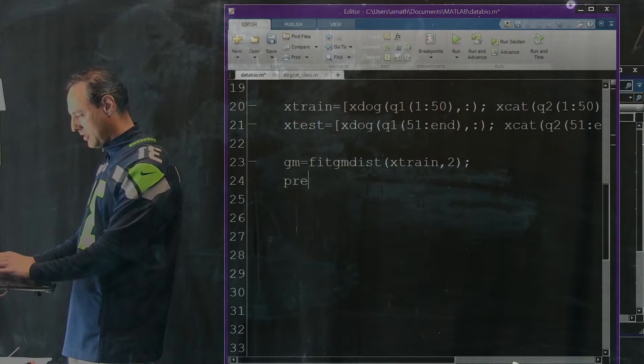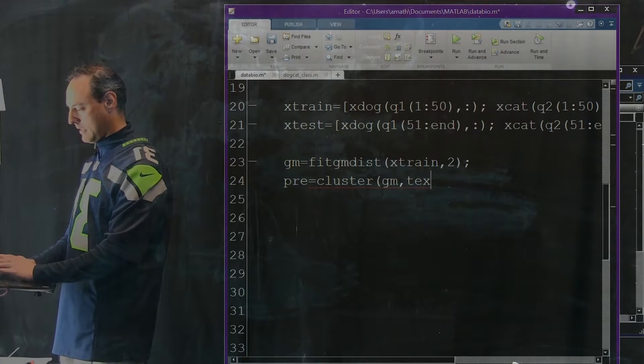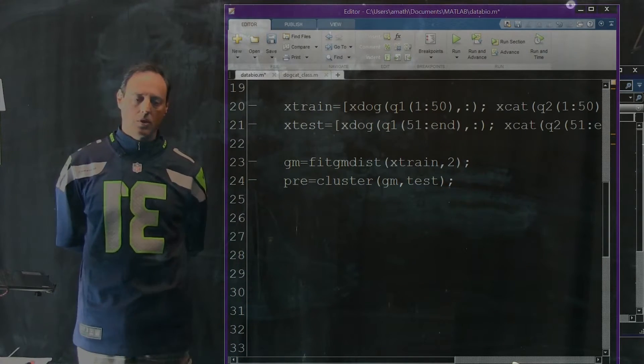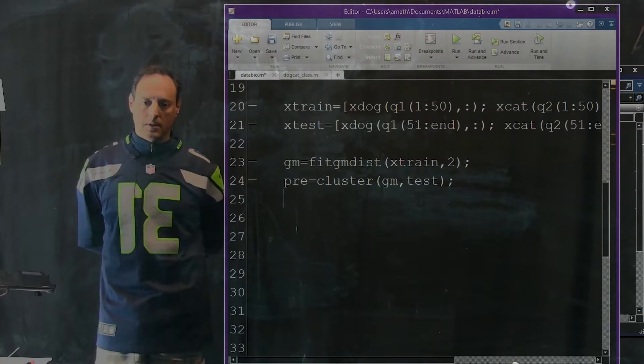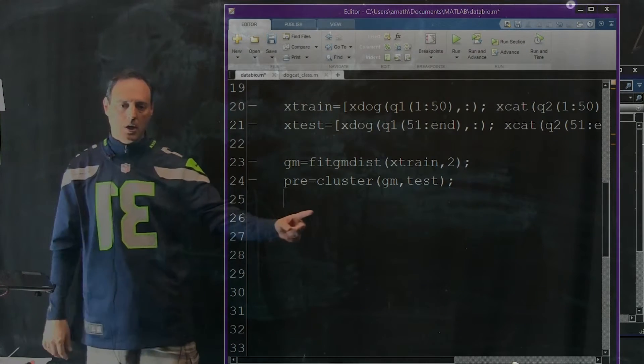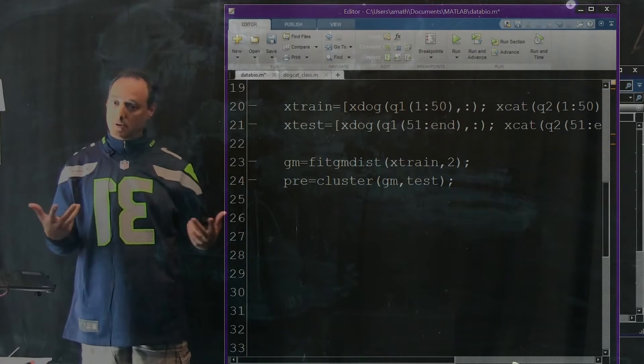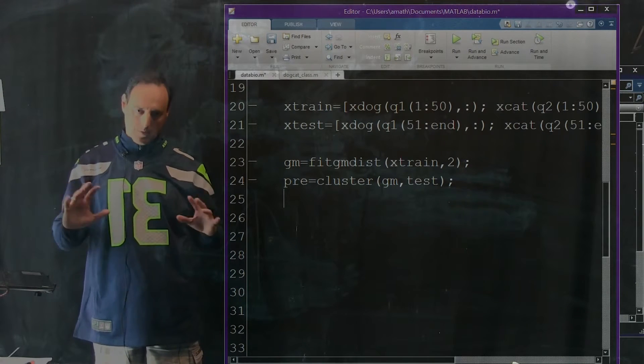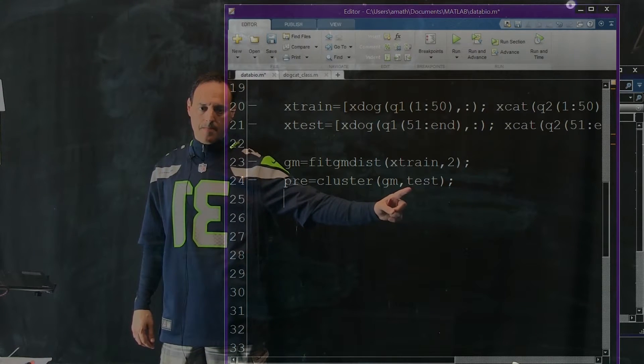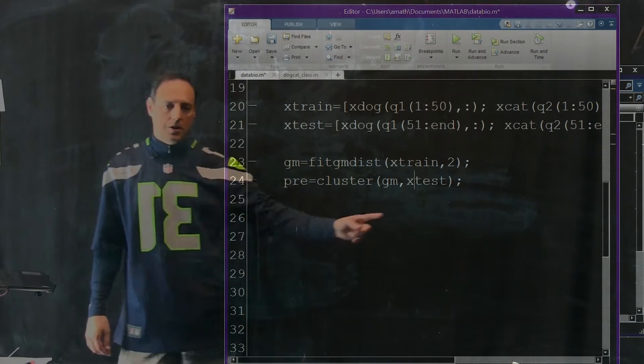And then you can use new data to throw in on this gm to classify new data. So, we're going to do the prediction. Let's call it pre, will be the prediction, which will be cluster now, gm, xtest. So, the cluster is an interesting command. It works with various of these statistical packages and clustering algorithms or classification algorithms. What you're going to send into cluster is the results from this gm. So, now this is going to take you into the parameters. It's going to recognize them as, oh, these are Gaussian mixture model fits, because there's a tag in here saying that. And then you can bring in your new test data. Let's actually call that xtest. You're sending your test data. And what it's going to do is going to give you a prediction about what that test data is. Is it a cat? Is it a dog?